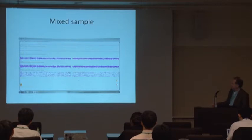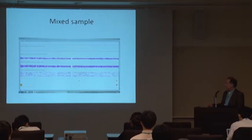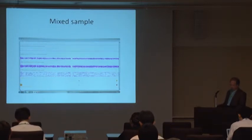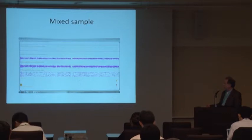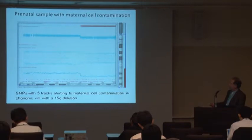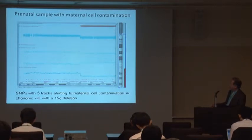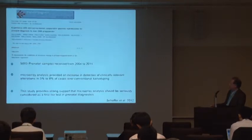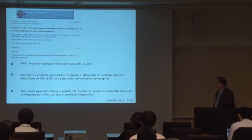You can also use the SNPs to help you when there's a mixed sample. The technologist who was pipetting this particular plate mixed up two samples and it gives you five tracks, which is always a telltale sign that something is not quite right. So again, always helps you in many ways. And this again, the mixed sample, five tracks, but this one had a deletion. So this was a CVS that had a deletion, so this was very interesting.